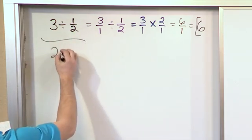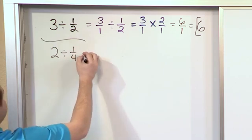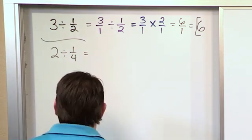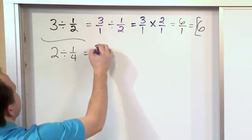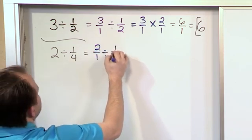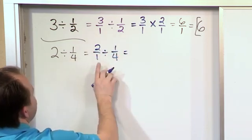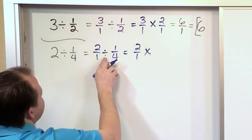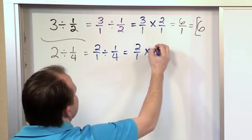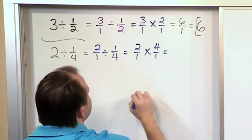So what if you have 2 divided by 1 fourth? Well, again, very simple. The 2 becomes 2 over 1. We're dividing by 1 fourth. And then you just keep the first fraction and change this division to multiplication and flip this over. Very easy to do.